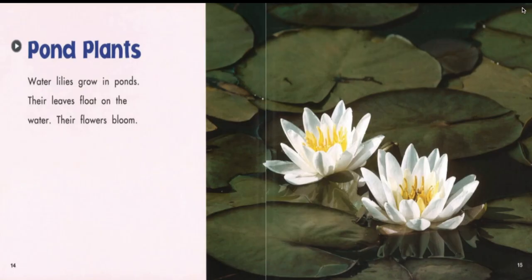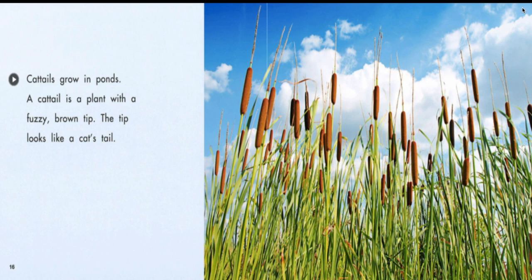Pond plants. Water lilies grow in ponds. Their leaves float on the water. Their flowers bloom. Cattails grow in ponds. A cattail is a plant with a fuzzy brown tip. The tip looks like a cat's tail.